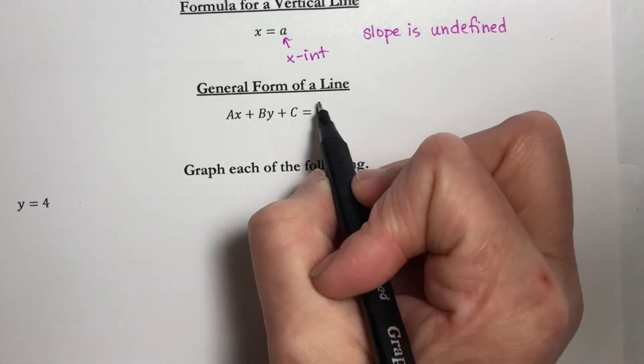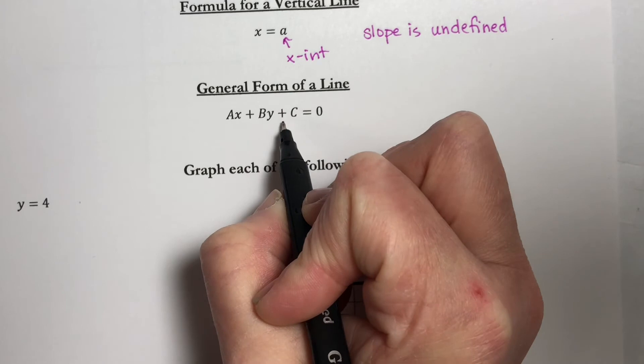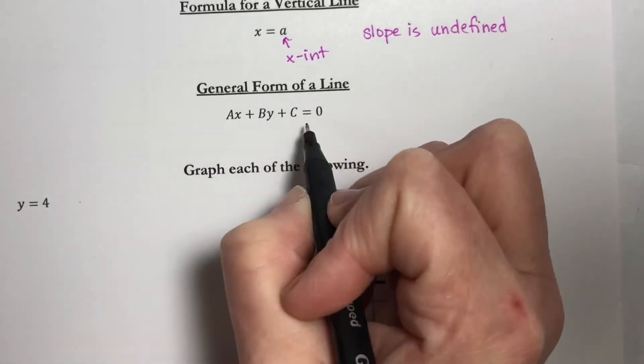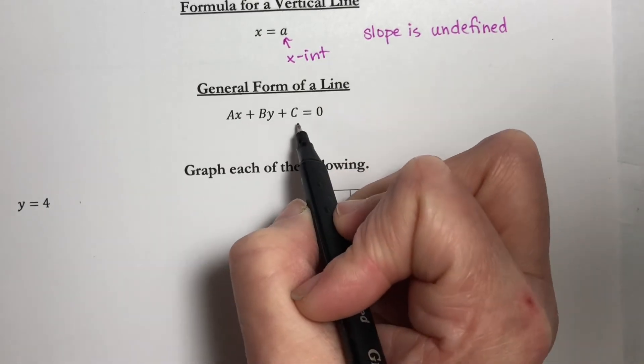For general form, we want to have a 0 on this side and have ax plus by plus c equal to 0. So we want everything on this side. We want our x first, then our y, and then our constant.